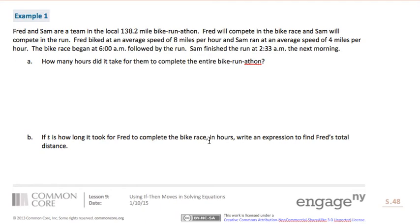Example one. Fred and Sam are a team in the local 138.2 mile bike-run-a-thon. Fred will compete in the bike race and Sam will compete in the run. Fred biked at an average speed of eight miles per hour, and Sam ran at an average speed of four miles per hour. The bike race began at 6 a.m., followed by the run. Sam finished the run at 2:33 a.m. the next morning.